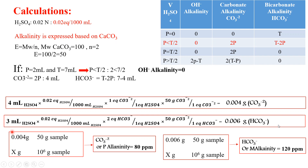For bicarbonate, we use 3 mL of acid with normality 0.02 N. One equivalent of sulfuric acid reacts with one equivalent of bicarbonate, and one equivalent of bicarbonate is 50 grams as calcium carbonate. This gives us 0.006 grams of bicarbonate in 50 grams of water.